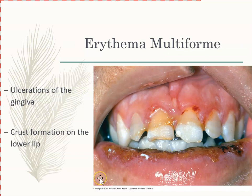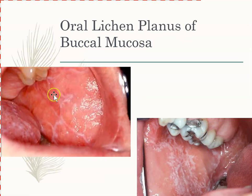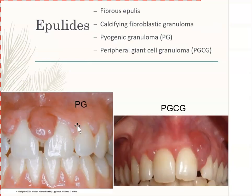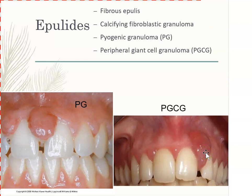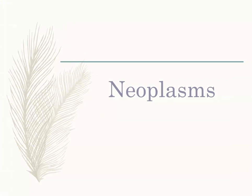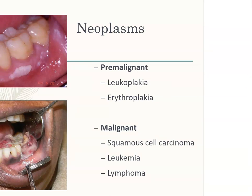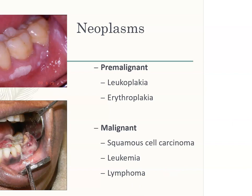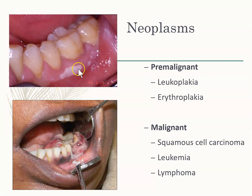Other immune conditions include erythema multiforme, lichen planus — an autoimmune disease showing white striations known as Wickham striae. You can also get reactive processes: pyogenic granuloma due to pregnancy, and peripheral giant cell granuloma. There are also neoplasms — cancerous lesions — that fall under non-dental biofilm-induced conditions. Something may appear wrong with the gums, but it has nothing to do with plaque; it could be a cancer.